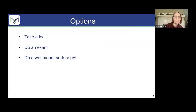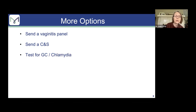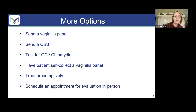Finally, you're just starting your day and you get a phone call from a 51-year-old you've never seen, complaining of vaginal discharge, dysuria, and dyspareunia, all for two months. Keep these in the back of your mind as we go through this talk. Options would include: take a history, do an exam, do a wet prep and/or pH, send a vaginitis panel — either nucleic acid amplification testing or PCR testing — send a vaginal culture, do a test for gonorrhea and chlamydia, have the patient self-collect a vaginitis panel covering yeast, bacterial vaginosis, and trichomoniasis, or treat presumptively or schedule an in-person appointment.